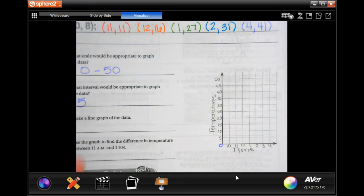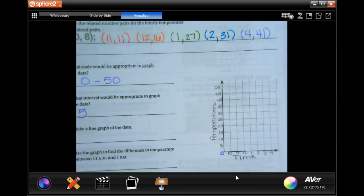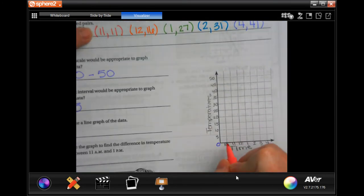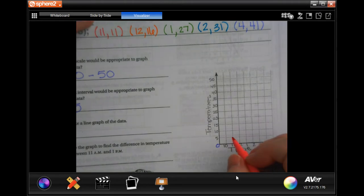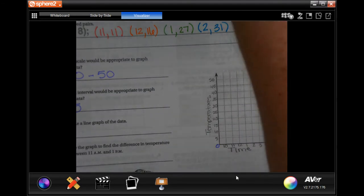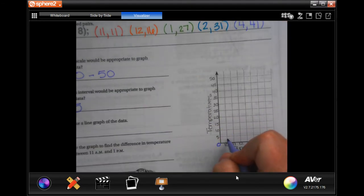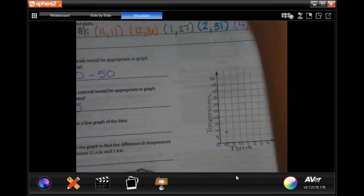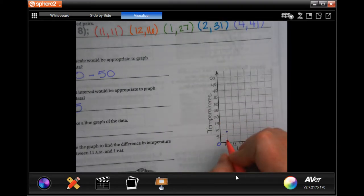So now I'm going to graph my data points. I'm going to start with 10, 8. So 10 and we're going to go just about there. Now we're going to go 11, 11, so 11 to 11 right there.